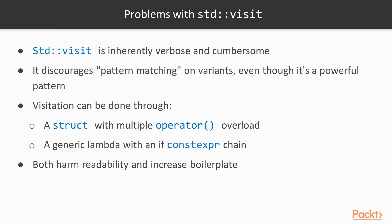std::visit has a lot of problems. Firstly, it's inherently verbose and cumbersome, which discourages pattern matching on variants even though it's a powerful and useful pattern. Visitation can be done through a struct with multiple operator call overloads, or through a generic lambda with an if constexpr/else if constexpr chain. Both harm readability and increase boilerplate.